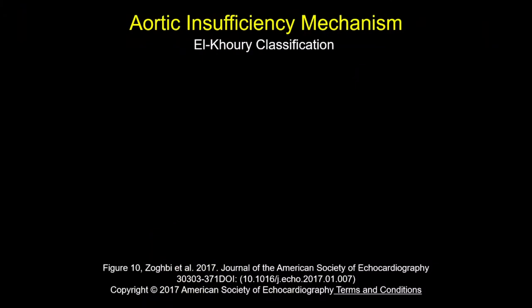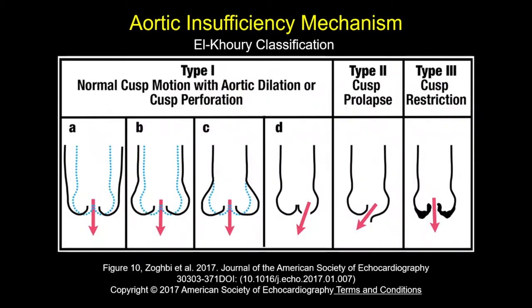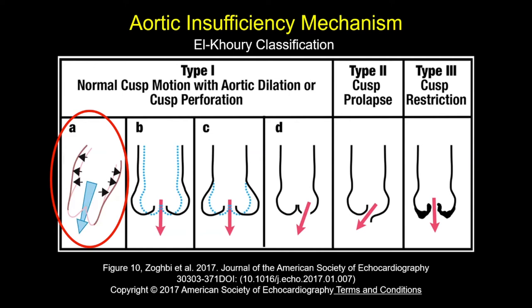We classify aortic insufficiency using the ALCORI classification, which looks at the structural abnormality causing AI and is based on the Carpentier classification: type 1 relates to normal cusp motion, type 2 to cusp prolapse, and type 3 to cusp restriction. This patient would have type 1A — the problem exists from the sinotubular junction and above, involving the STJ and ascending aorta with sparing of the root, yet AI is still present.